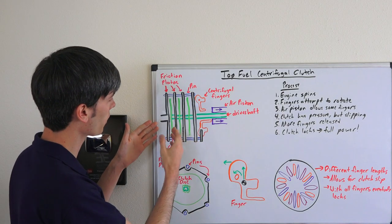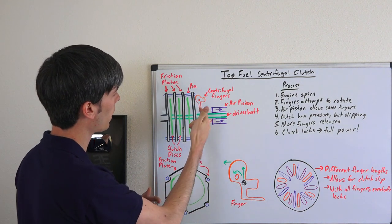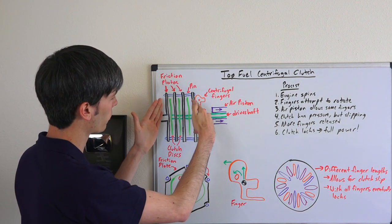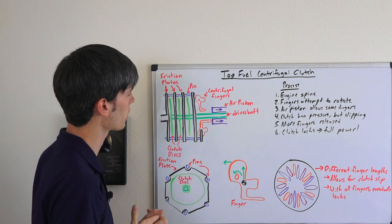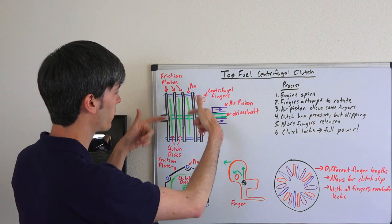The other things that you've got going on are these involuted fingers. These fingers here are what apply pressure to this outer friction plate and compress this clutch pack, and the way they do this is using centrifugal force as this starts to rotate.